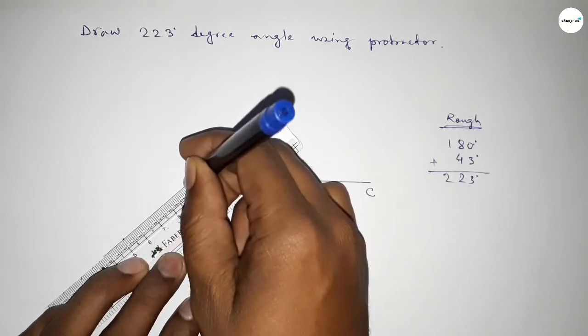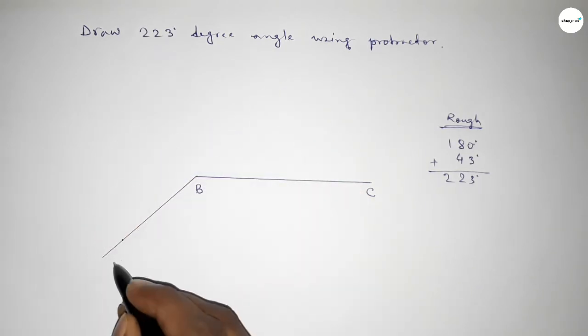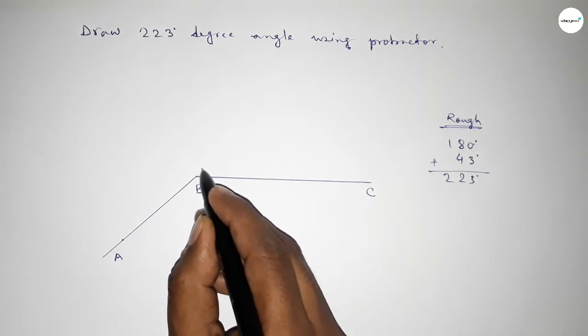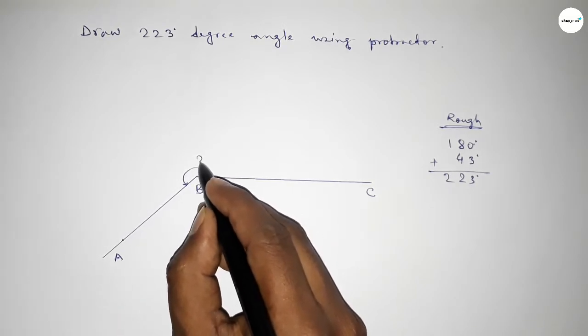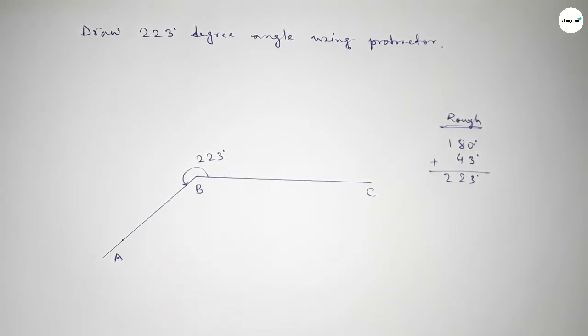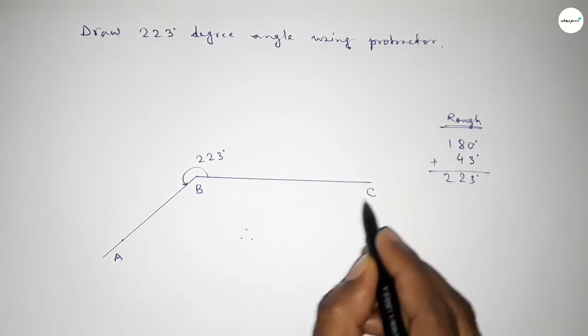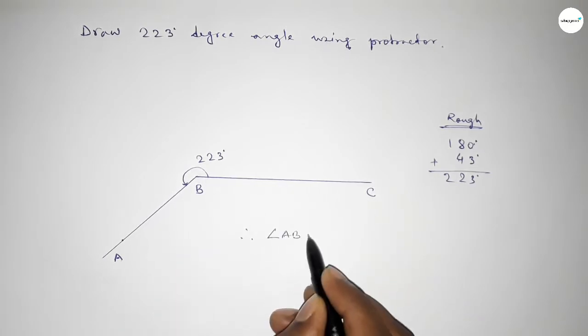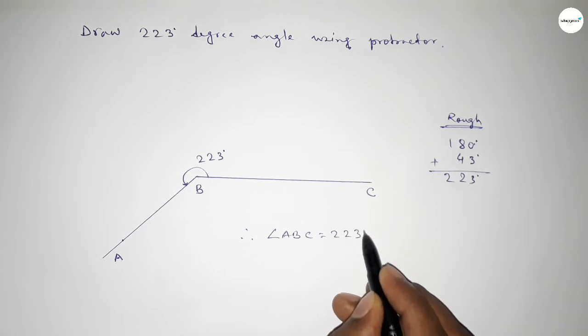Now joining this side and taking here point A. So angle ABC - after this, this is a 223-degree angle. Therefore, angle ABC equals 223 degrees. That's all, thanks for watching. If this video is helpful, then please...